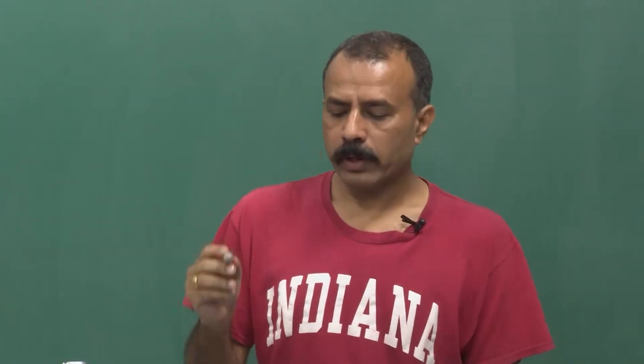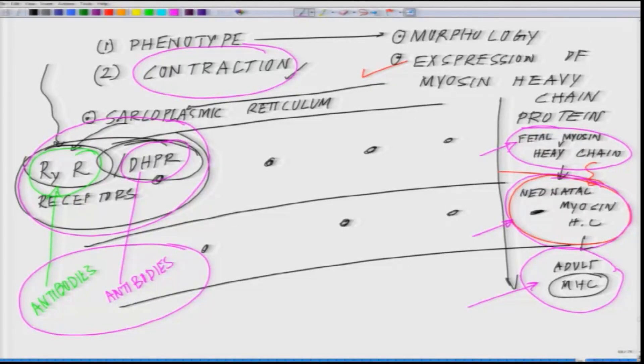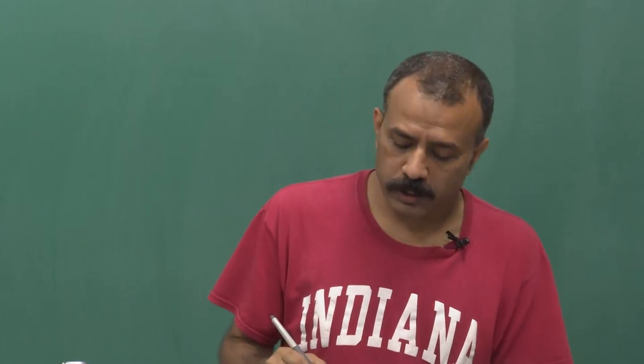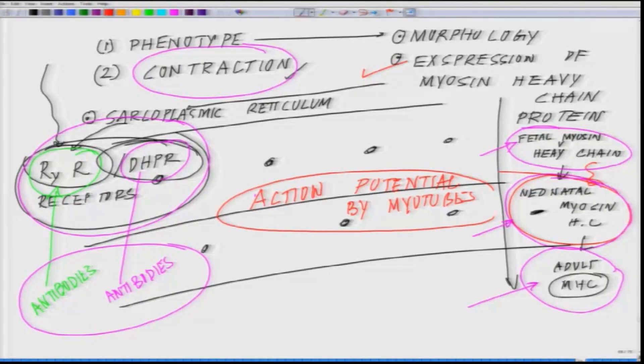What you need as tools: you need antibodies for fetal myosin heavy chain, to see early phase expression. You need antibodies for neonatal myosin heavy chain, antibodies for adult myosin heavy chain if you have prolonged culture, and antibodies against DHPR and ryanodine receptors. You should be able to see physical contraction plus action potentials generated by the muscle cells.